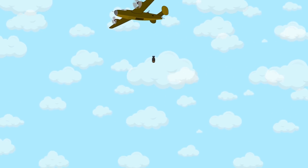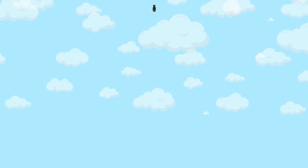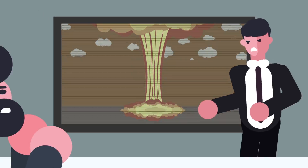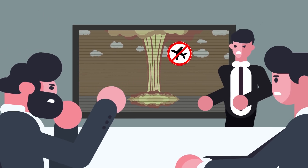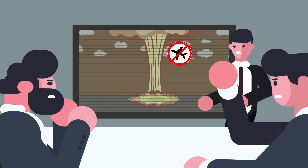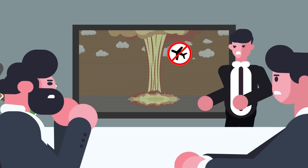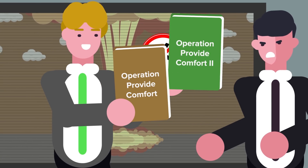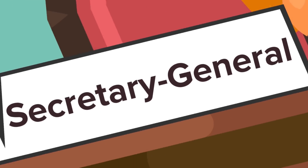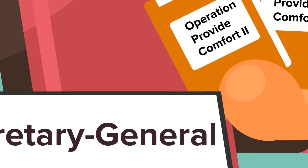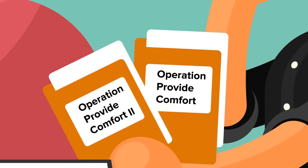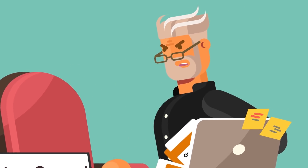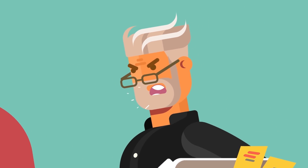After atrocities committed against the Kurdish populations of northern regions of Iraq, this no-fly zone was meant to prevent any possible bombing or chemical attacks against civilians, and was known as Operation Provide Comfort and Operation Provide Comfort II. While not specifically authorized by the UN Security Council and called illegal by the Secretary General of the UN, few nations protested their implementation.